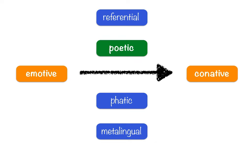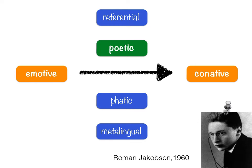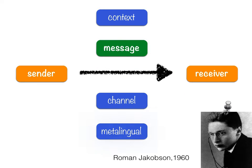To understand what they mean, we have to understand where they came from. And in 1960, Roman Jakobson suggested this series, saying that the functions of language come from the different elements of communication. So if we have six functions, we have six elements.